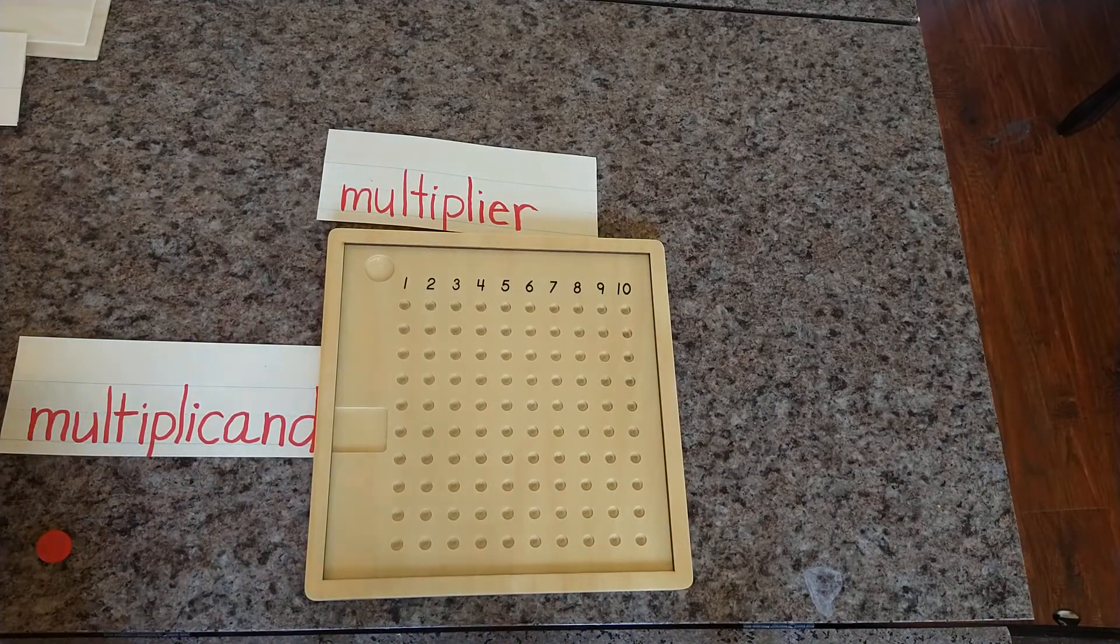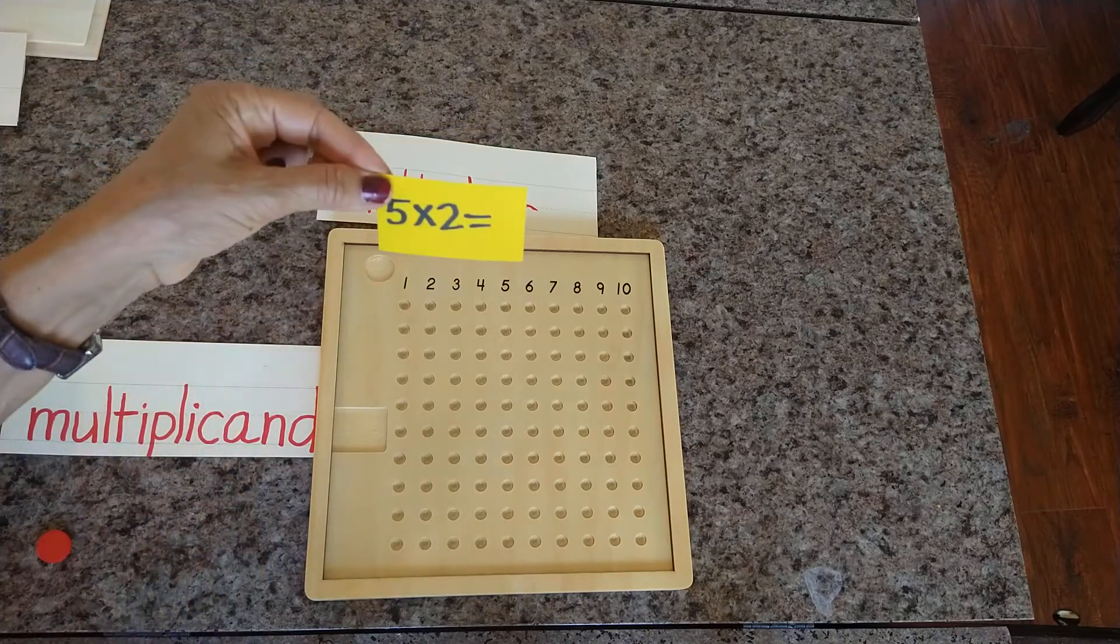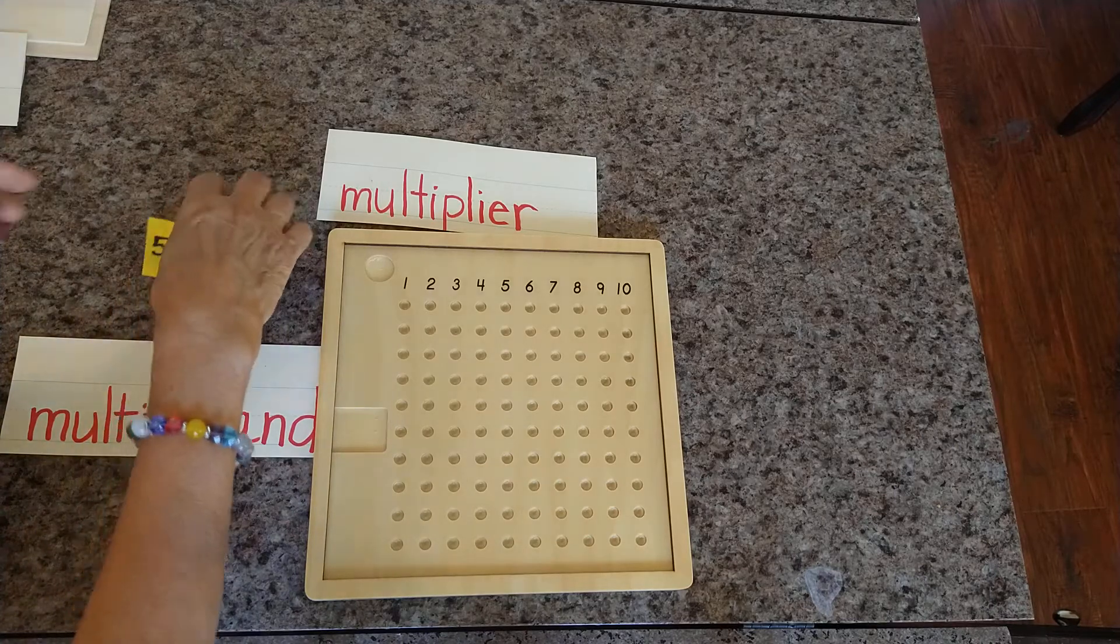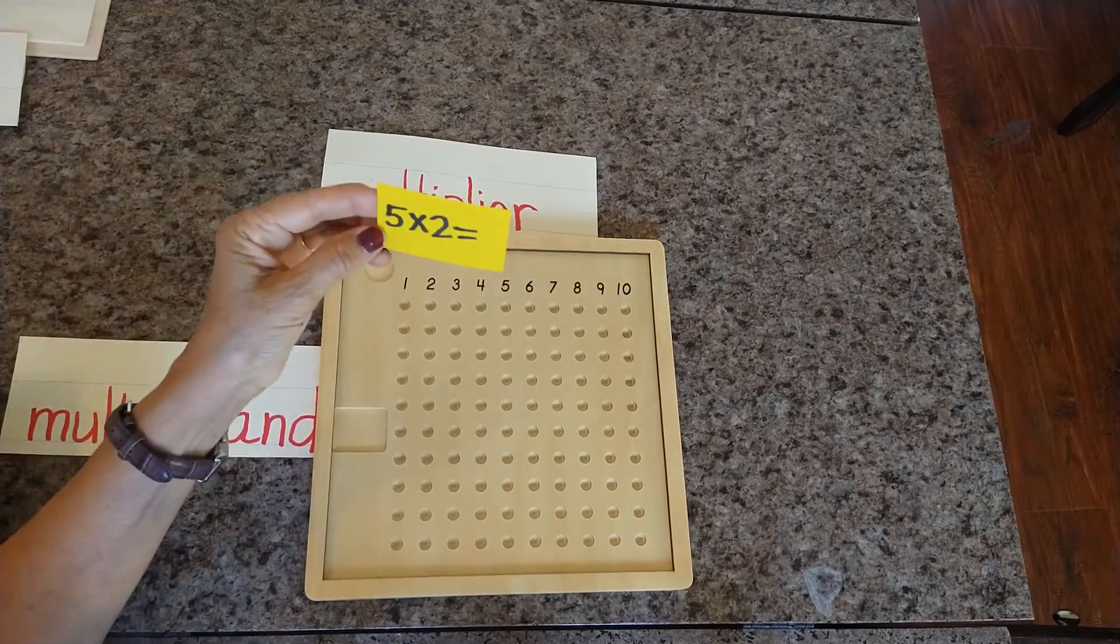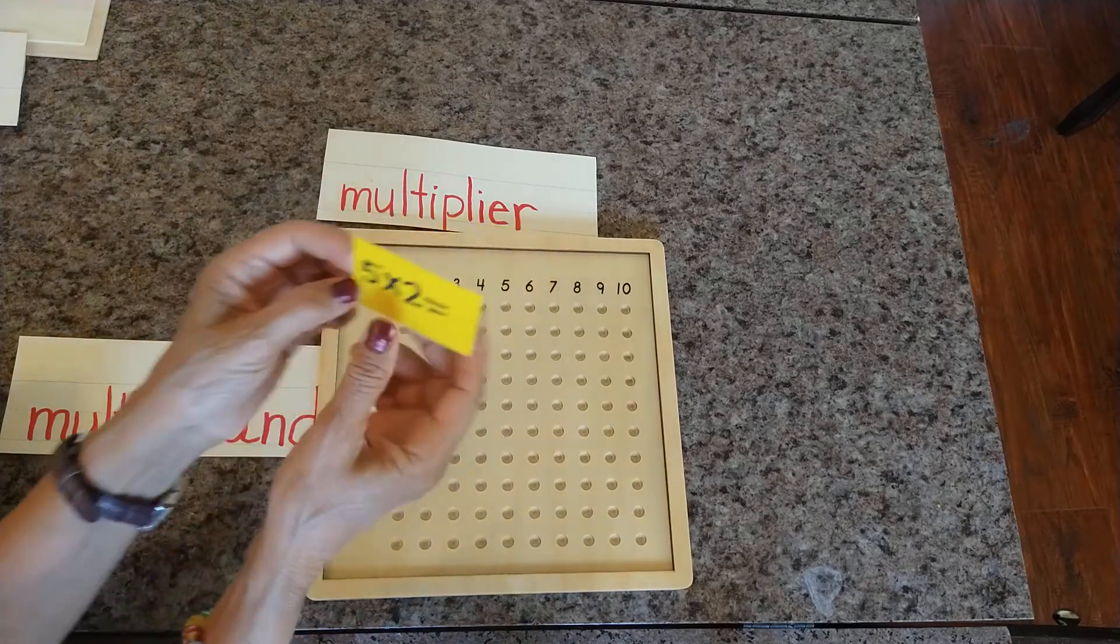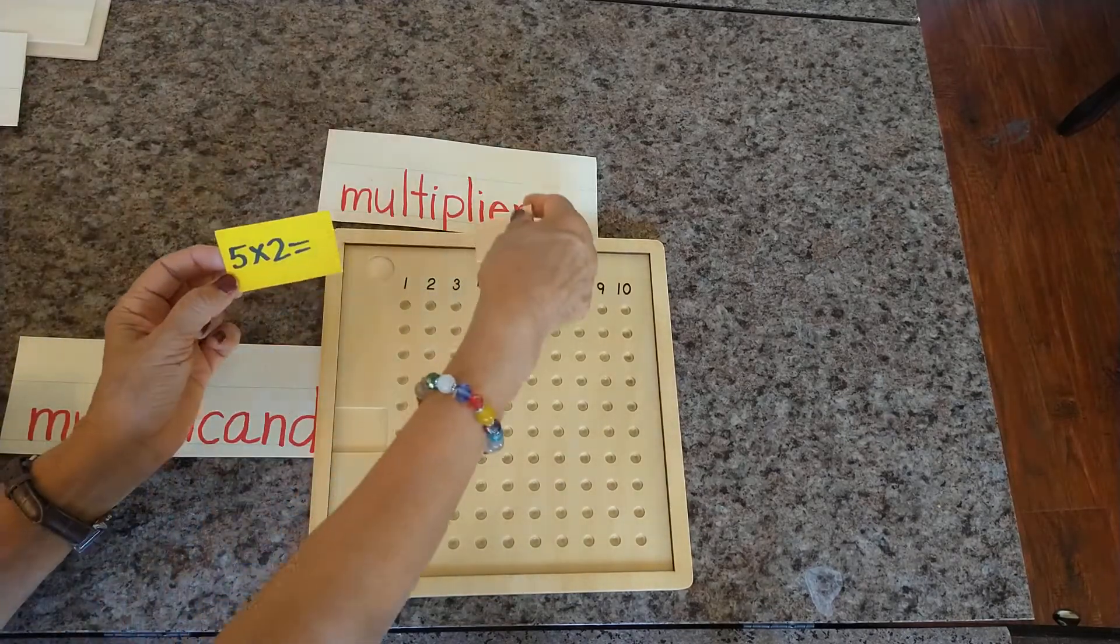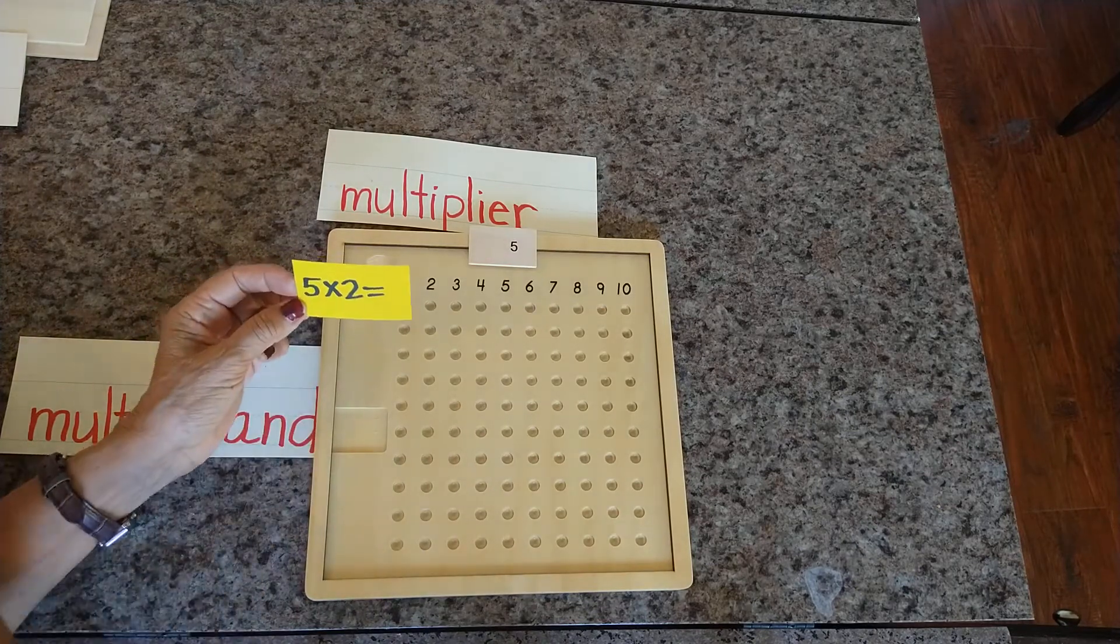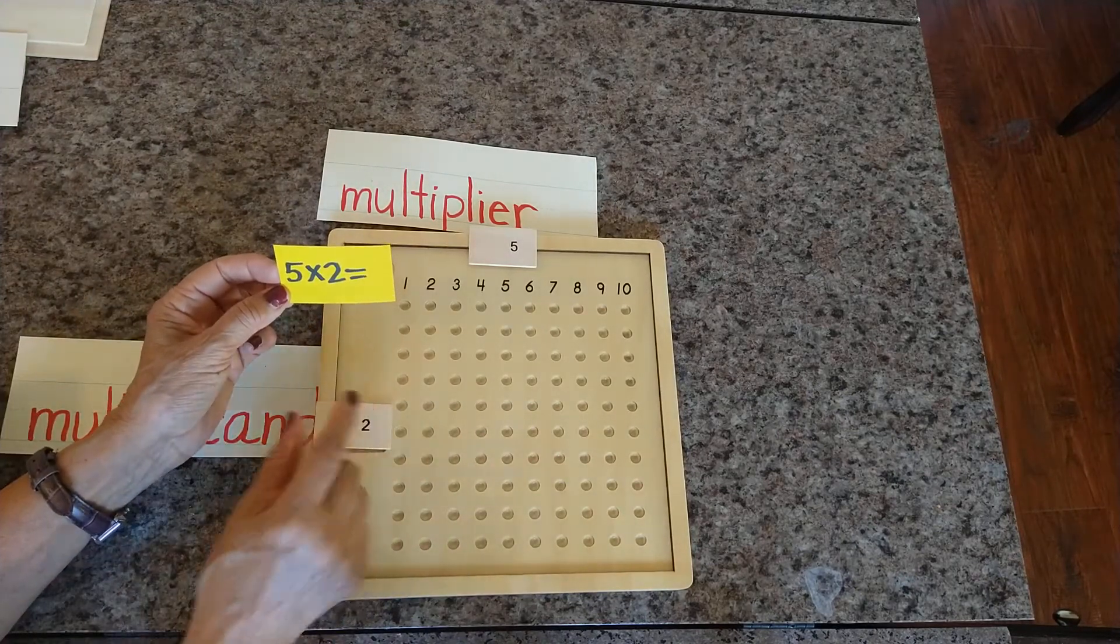I am going to take 5 times 2, this equation. So I am going to place it here. So when I say 5 times 2, where is the multiplier? 5. So it will go on the top. Where is the multiplicand? 2. So where will the 2 go? Right over here.